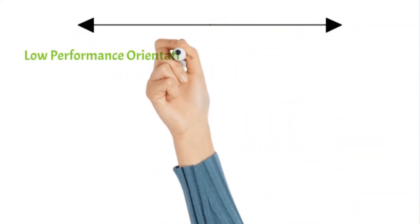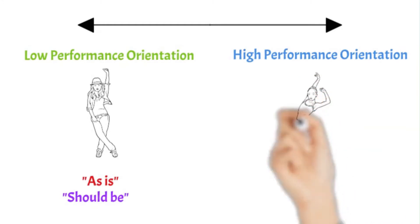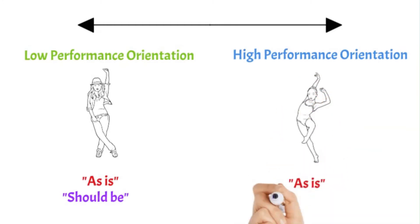Performance orientation is the degree to which a collective encourages and regards, and should encourage and regard, group members for performance improvement and excellence.